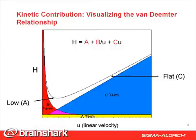So what can column manufacturers do to minimize the A term and C terms? One, use small particles. Two, minimize the space between particles. That is, making sure that the bed is packed very well and uniformly. And three, reduce the mass transfer into the stationary phase and particles.